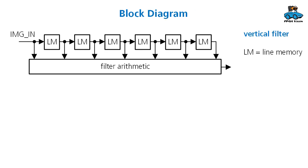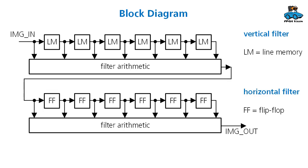Then you can implement the architecture with the following block diagram. You have the image input, your delay for the vertical filter, the input with line memories, and give these values to the filter arithmetic. In the second stage you use flip-flop stages for your delay and again you have a filter arithmetic and get the output of the filter.